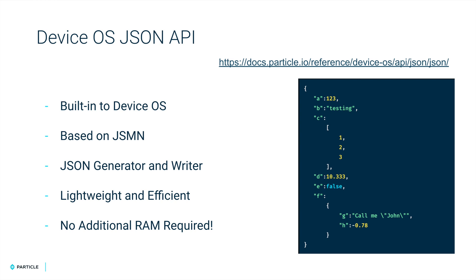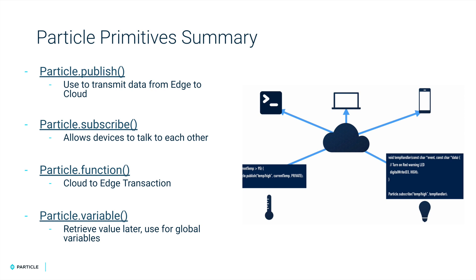Before we move on, let's quickly summarize these primitives. The publish function is used to transmit data from the edge to the cloud. Subscribe allows various devices to communicate with each other. Function is a cloud-to-edge transaction. And the variable can be used to retrieve data fields at a later time.